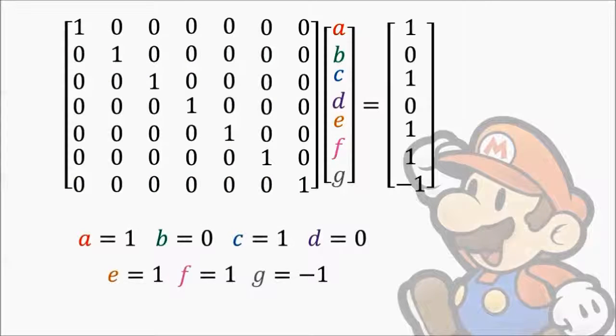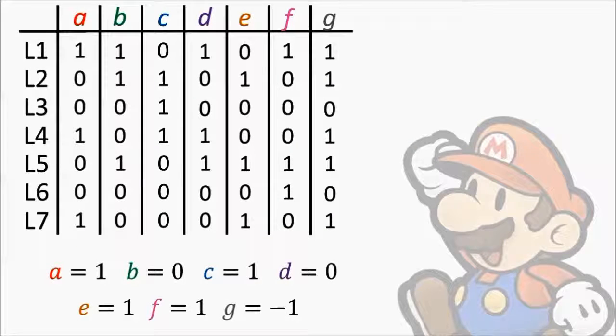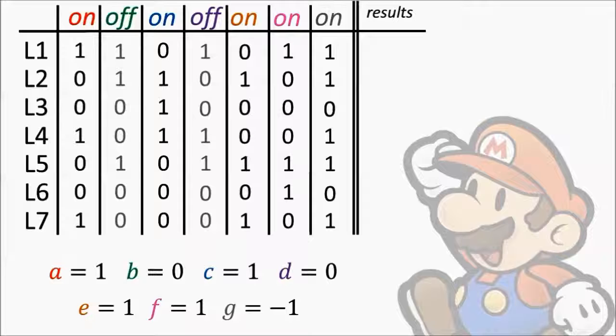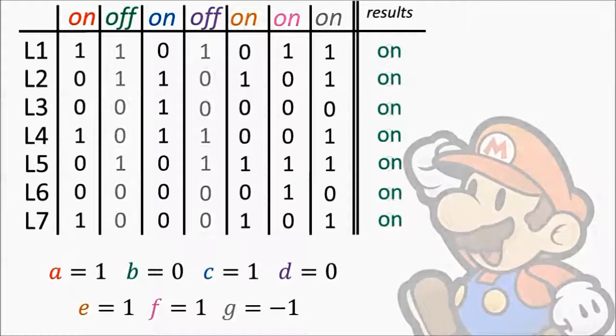We can read the solutions directly from the right-hand column. We see that A, C, E, F, and G are all odd numbers, so they represent on switches. B and D are even, so they represent off switches. Adding all the toggle patterns together, we see that the results are all odd numbers, which means all of the lights have been turned on. So again, our method works.